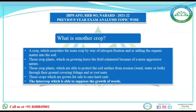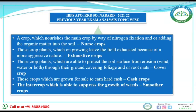What is a smother crop? Options: a crop which nourishes the main crop by nitrogen fixation and adding organic matter into the soil; crops which leave the field exhausted due to aggressive nature; crops which protect the soil surface from erosion through ground cover of foliage and root mats; crops grown for sale to earn hard cash; and an intercrop which is able to suppress the growth of weeds. A nurse crop nourishes the main crop by nitrogen fixation and adding organic matter — it increases the nutrient capability of the soil.